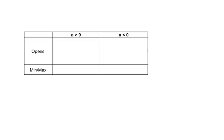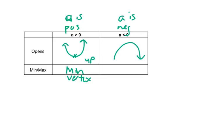If a is greater than 0, or a is positive, it means it opens up. This means that we have a minimum value at the vertex. If a is less than 0, that means a is negative, it opens down, and it means we have a maximum value at the vertex.